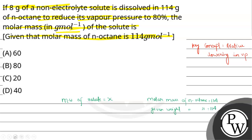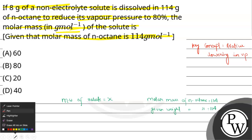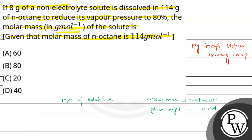Now, we will use the expression of relative lowering in vapor pressure, which says (P0A − Ps) divided by P0A is equal to the mole fraction of solute, which equals NB divided by moles of solvent plus moles of solute.